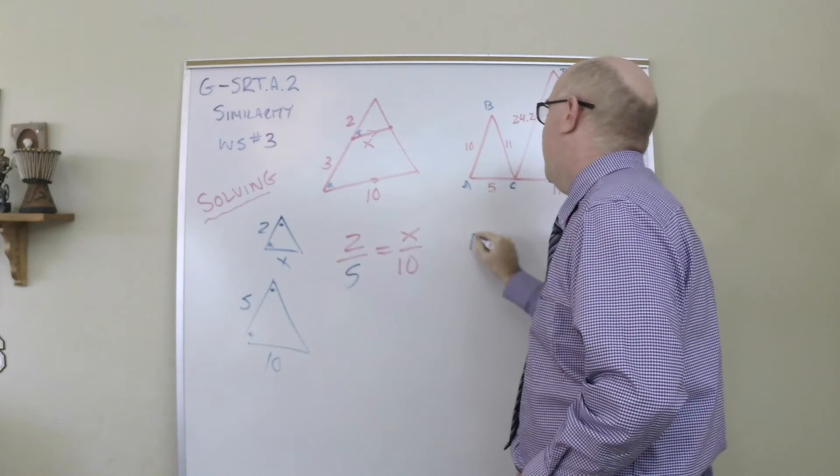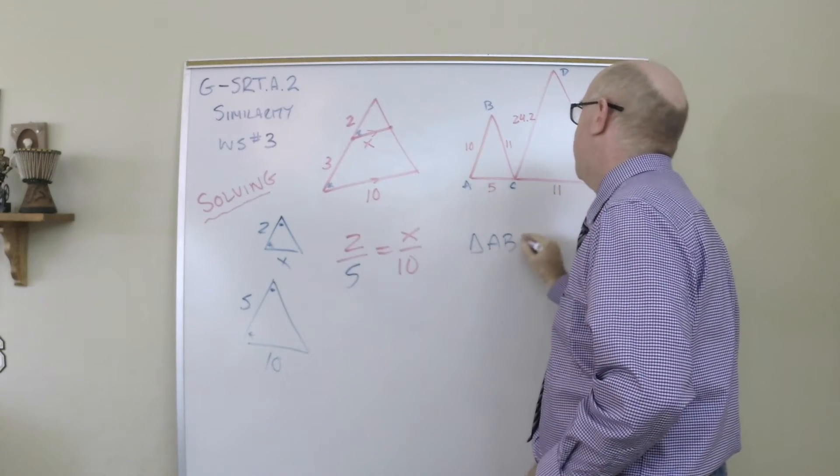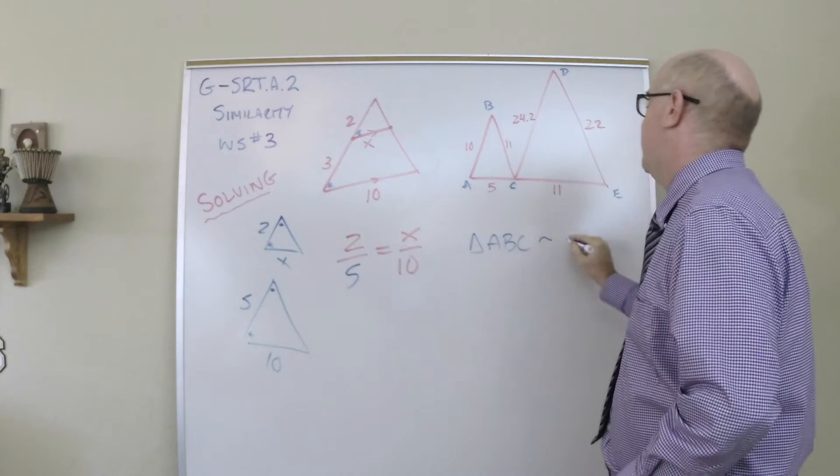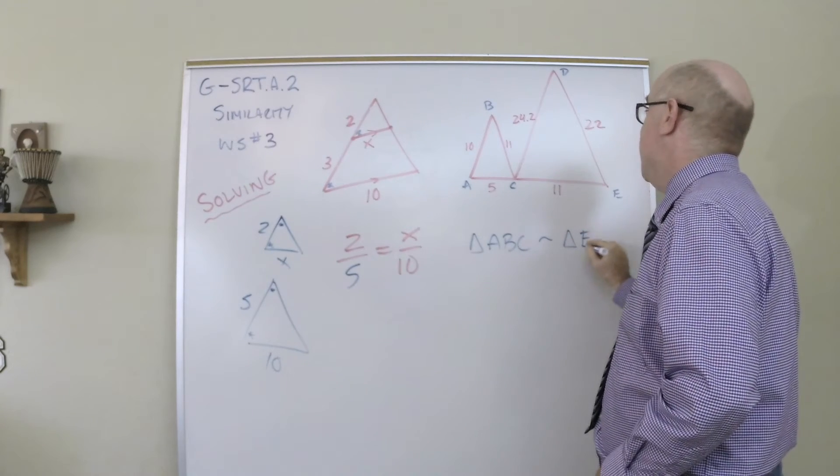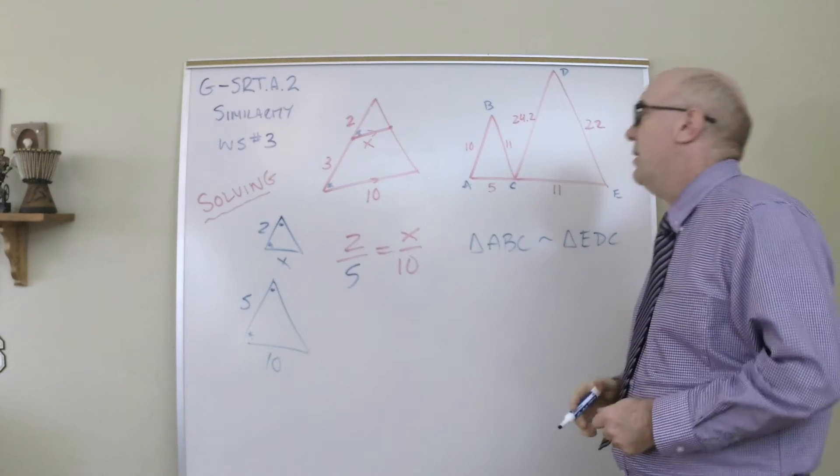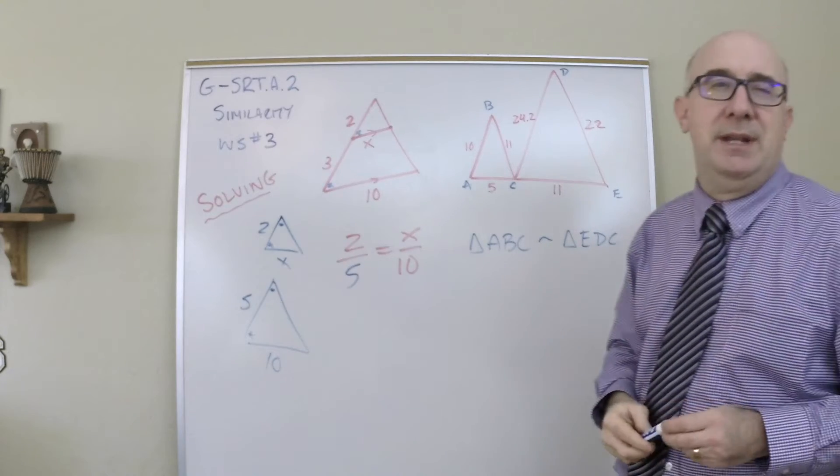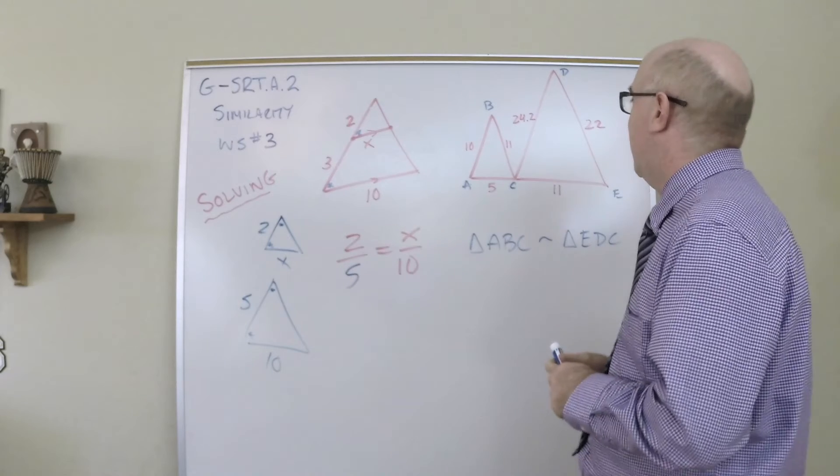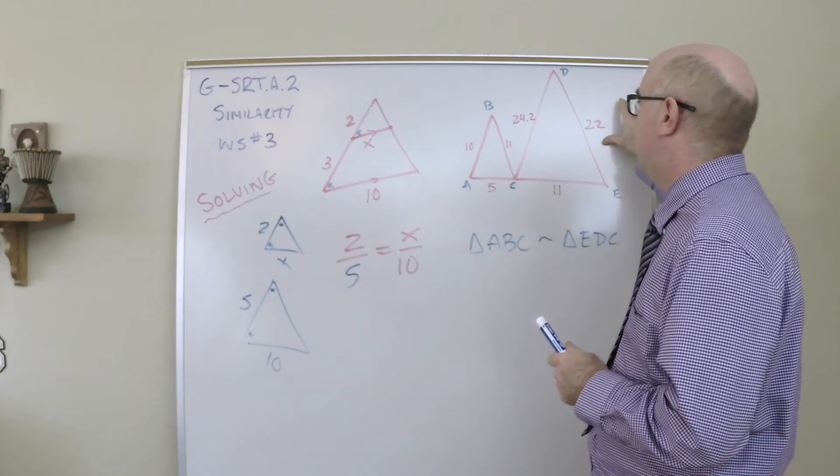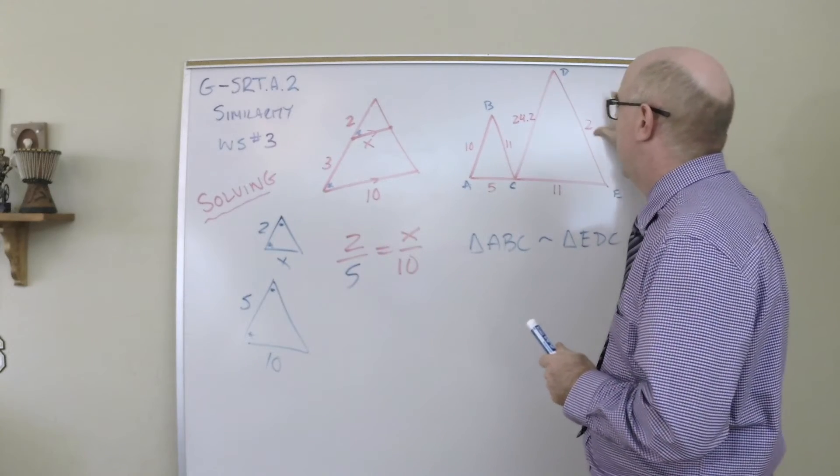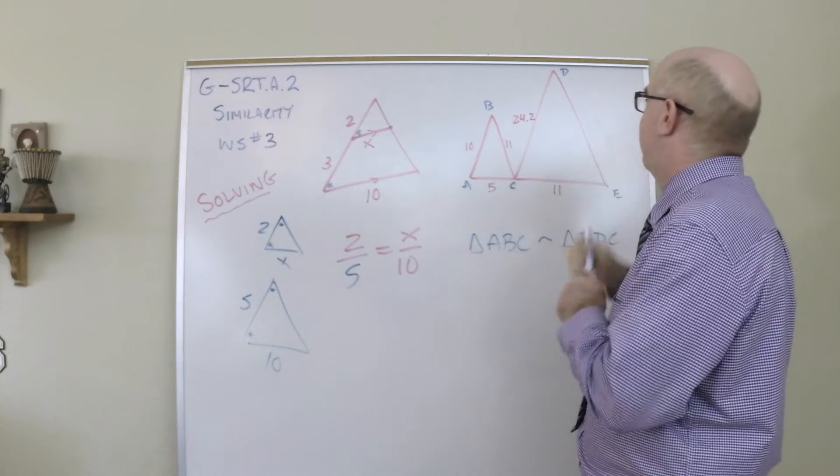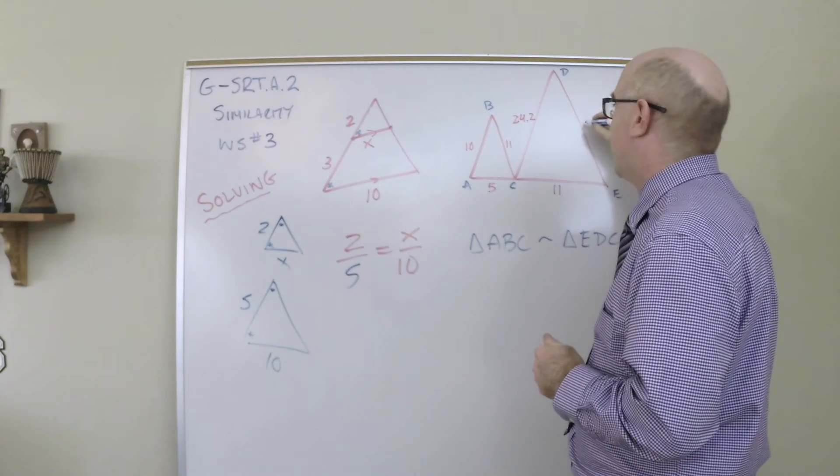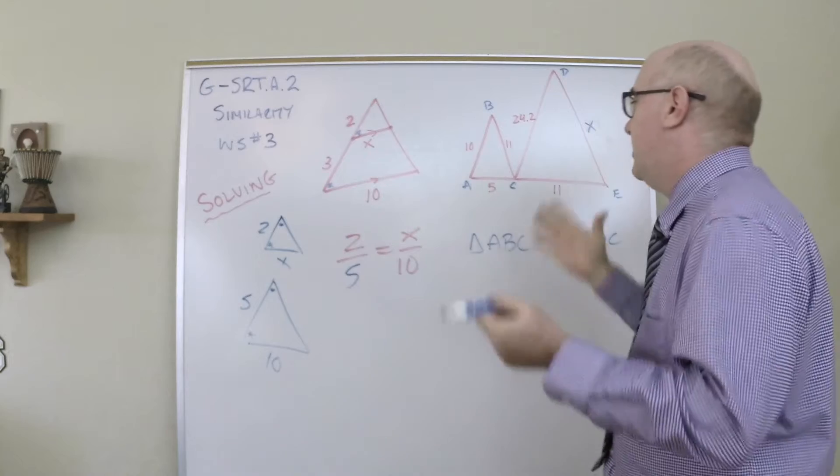And I might say triangle ABC is similar to triangle EDC. Now students will immediately look at a problem like this and say, I see how it goes. Or actually, what we probably need to do is drop one of these values and solve for x.